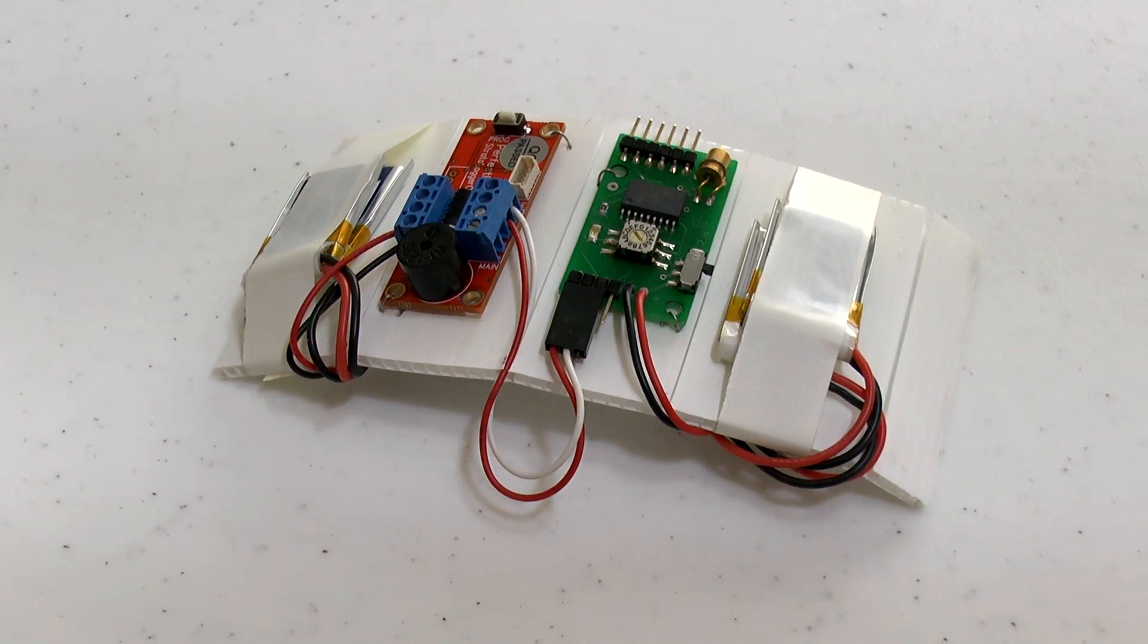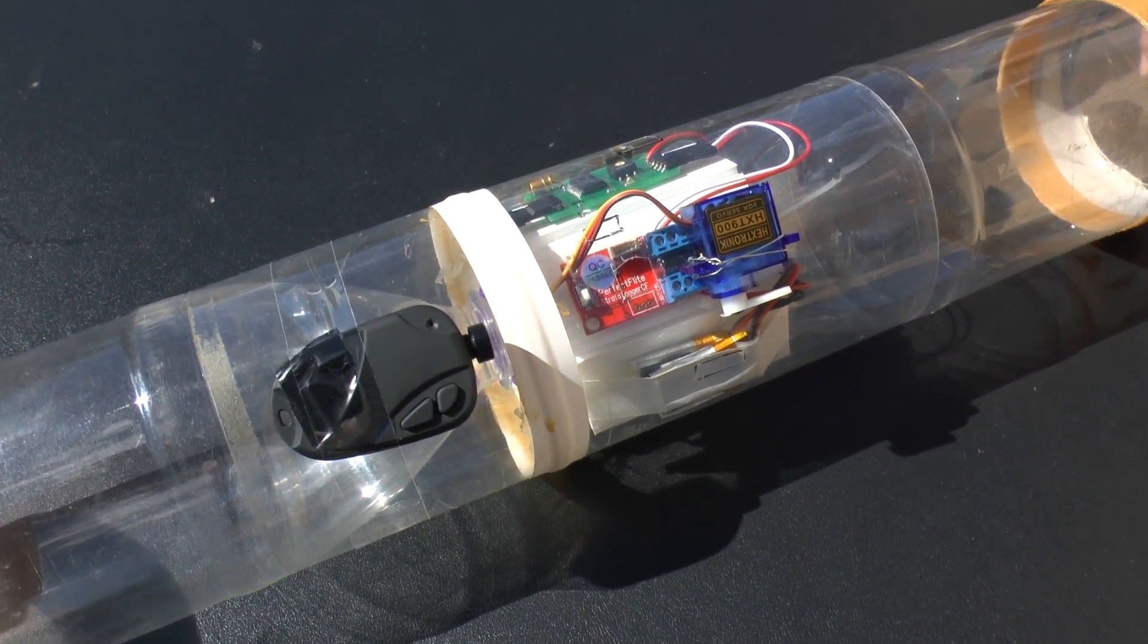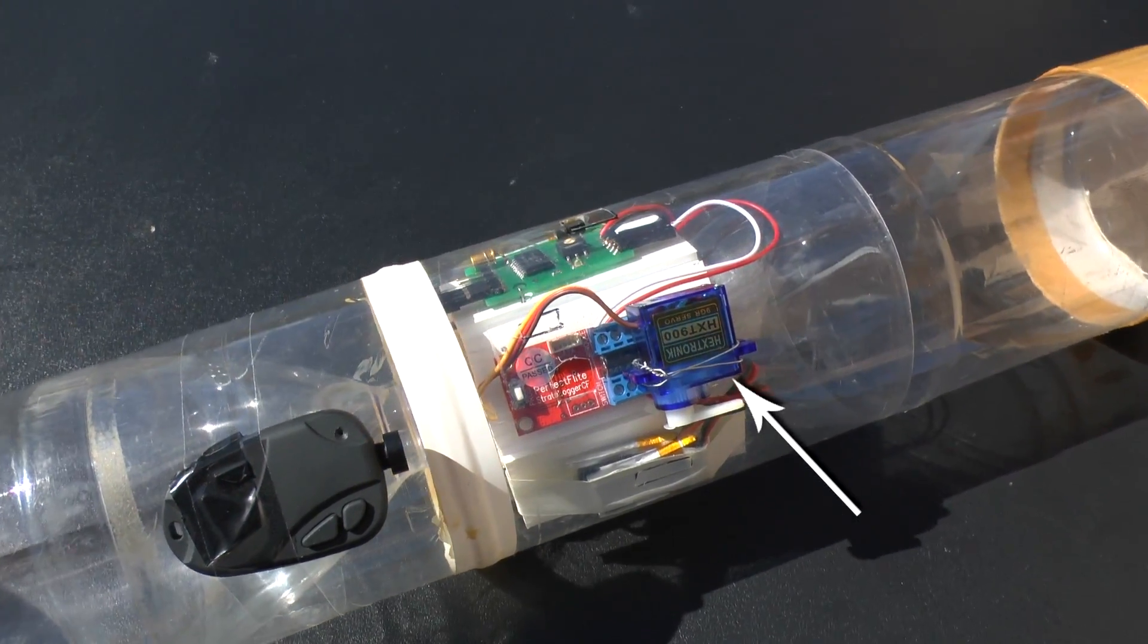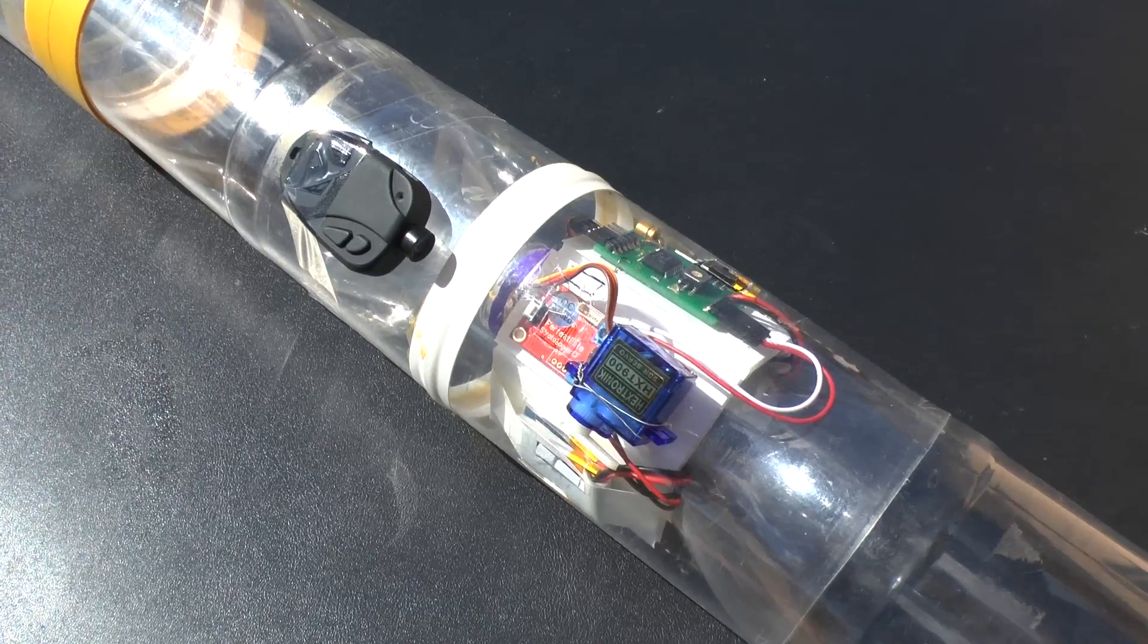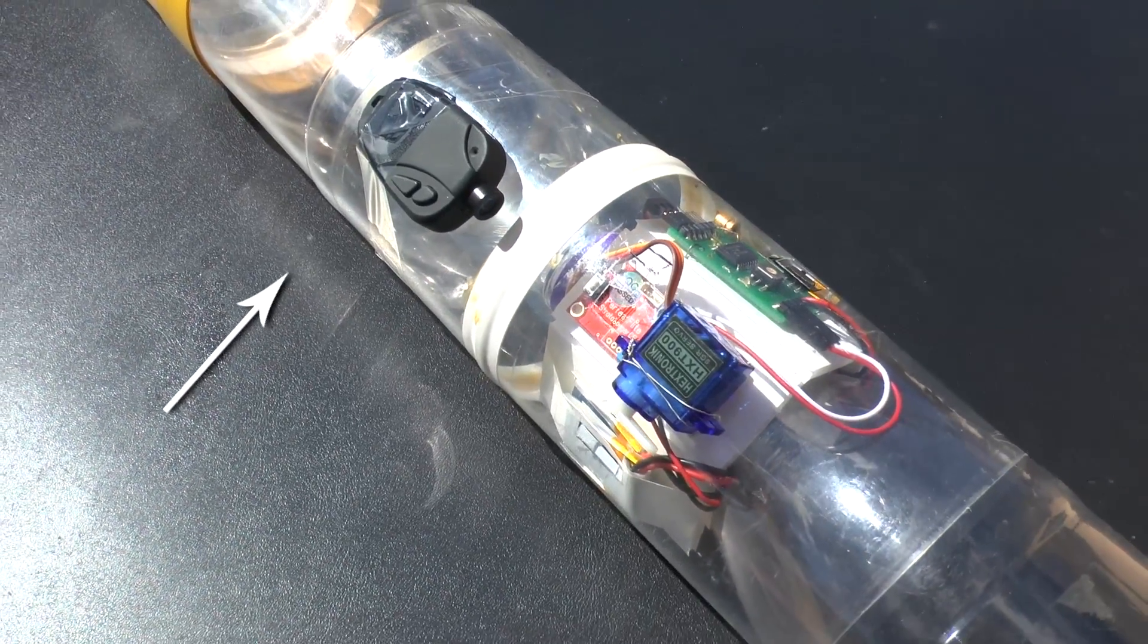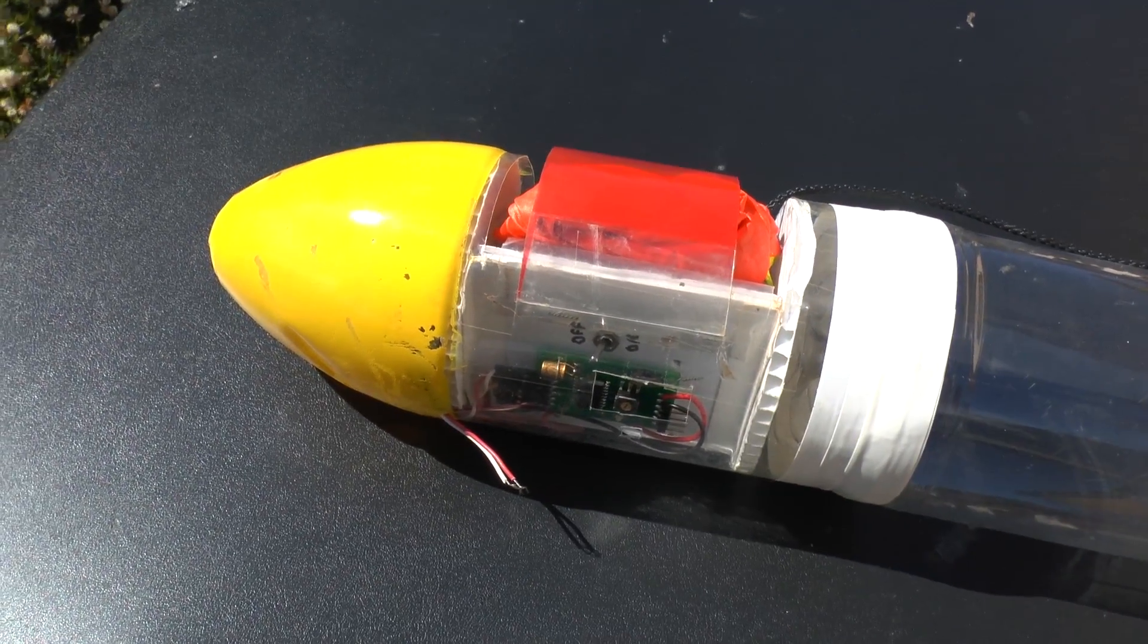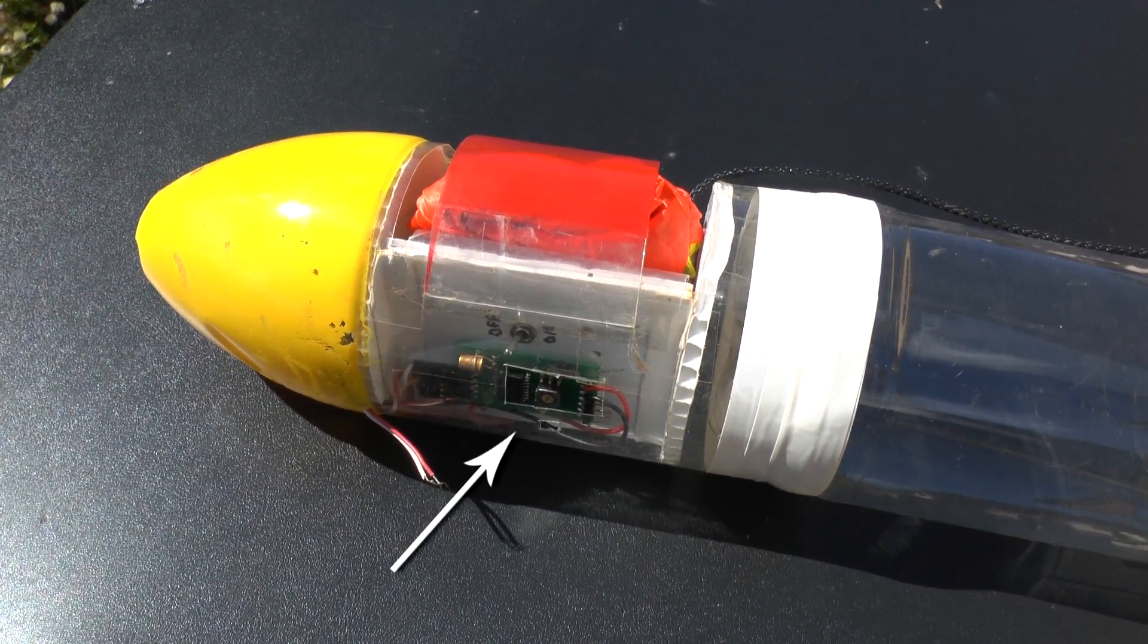We then attached the whole setup to a piece of coreflute and placed it inside the fairing of one of our normal water rockets. We connected a small servo to the servo timer and attached it to the outside of the fairing. We then placed the camera above the servo motor so that we could watch what it did in relation to the horizon. Actual parachute deployment was controlled independently by another timer in the nose cone.